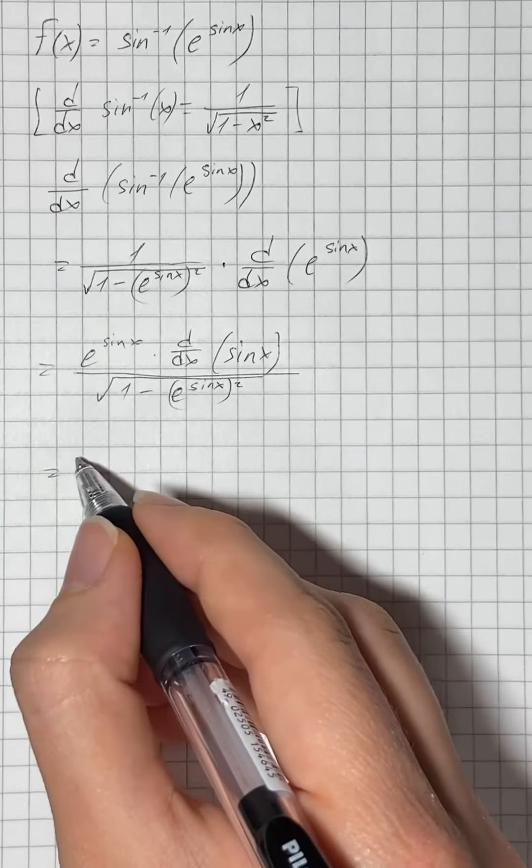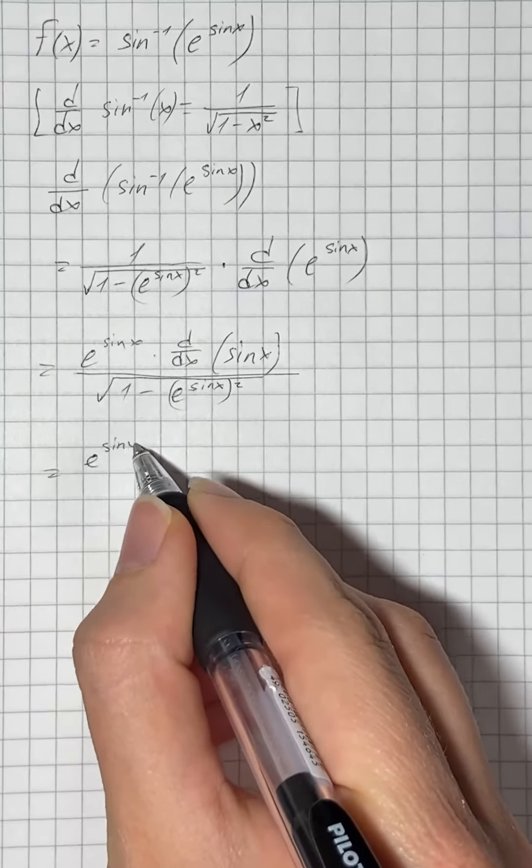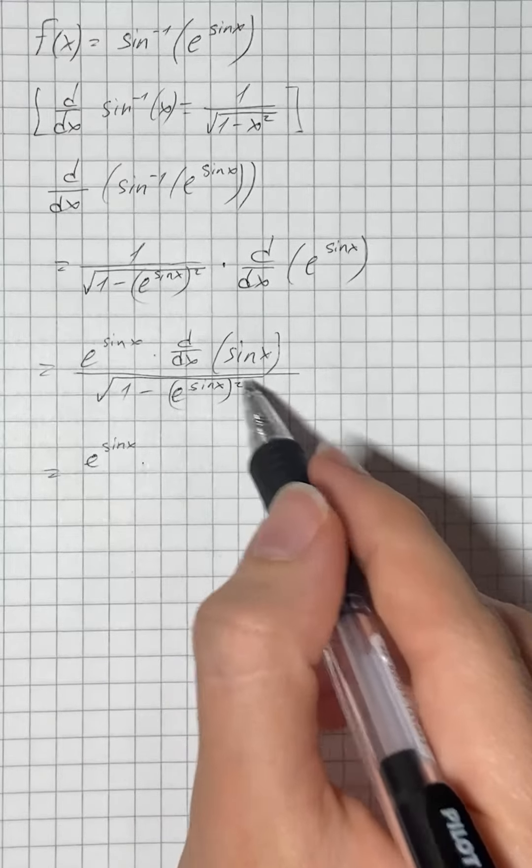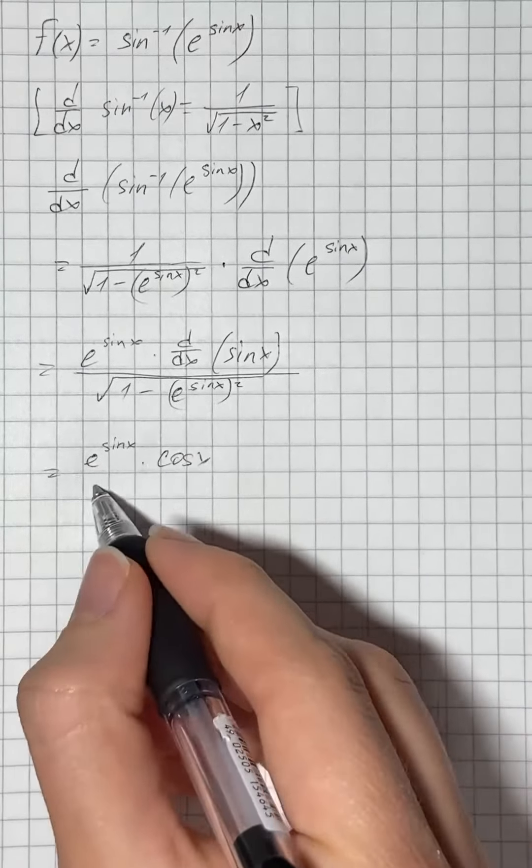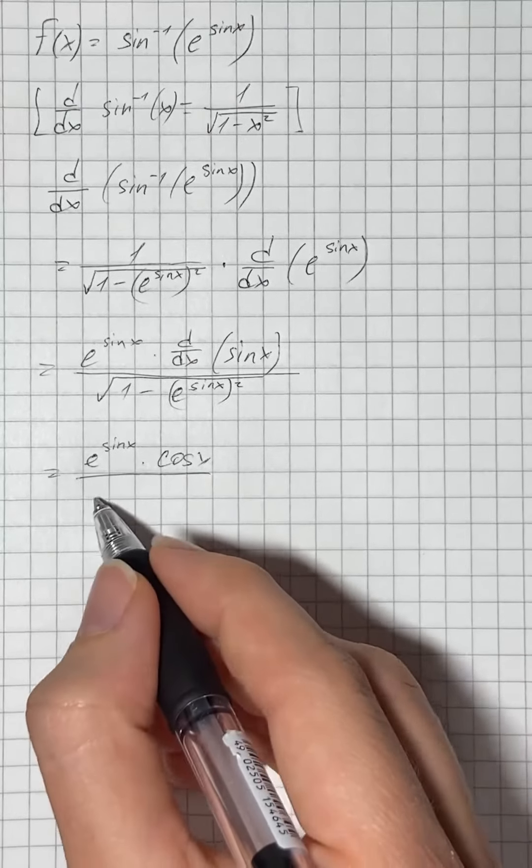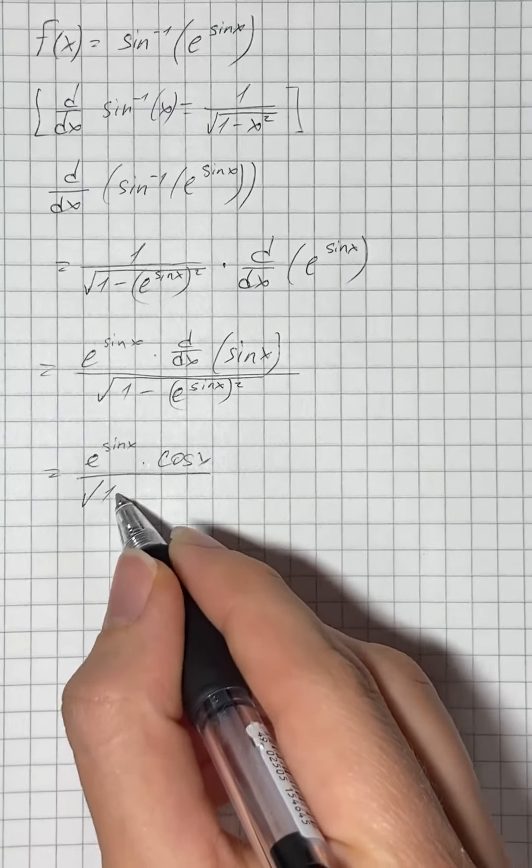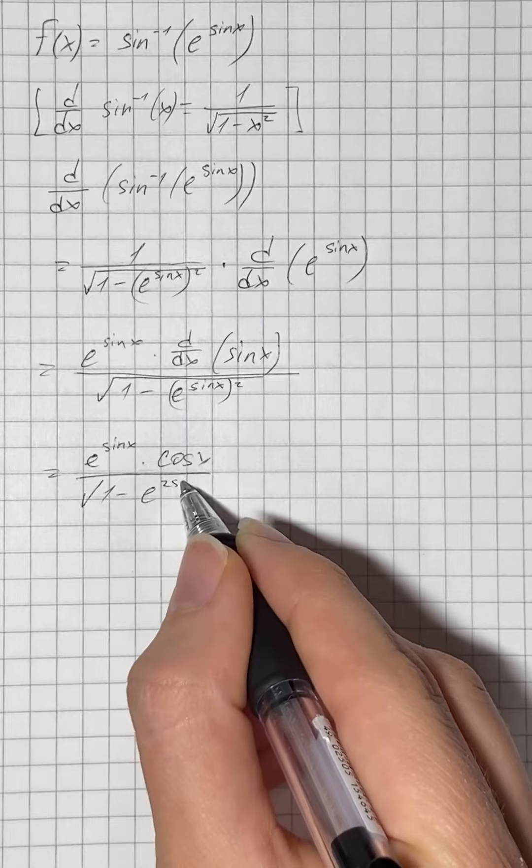So that's going to be e to the power of sine of x. The derivative of sine of x equals cosine of x, over the square root of 1 minus e to the power of 2 sine x.